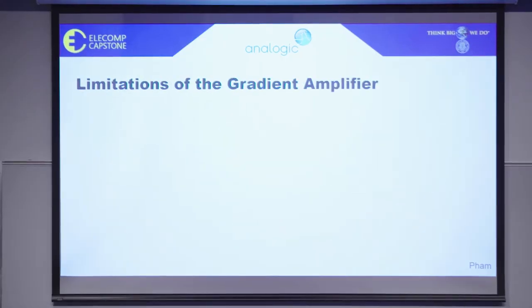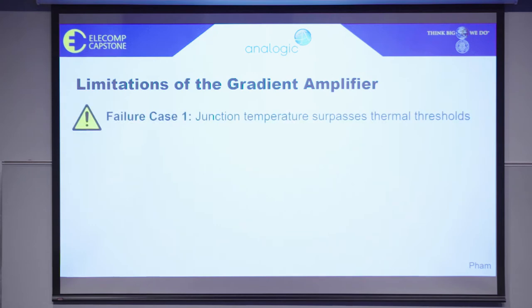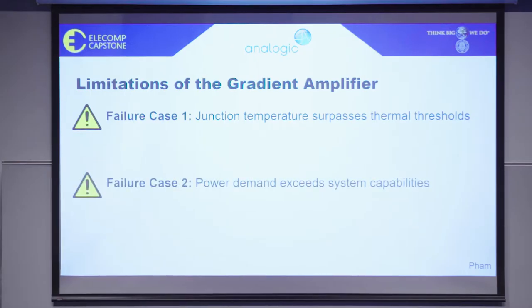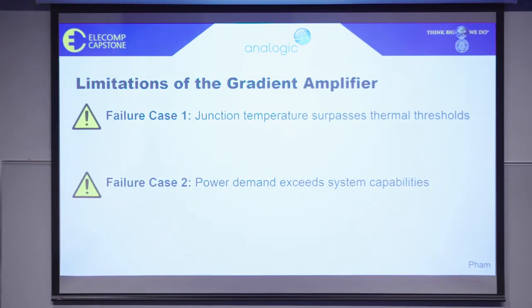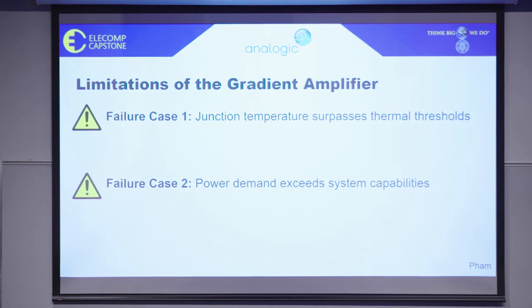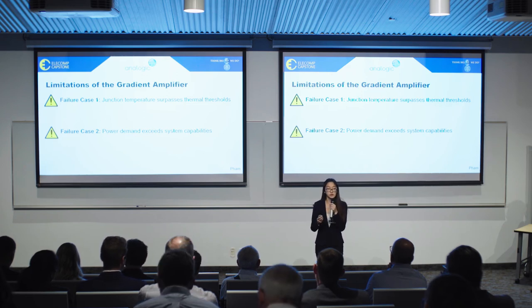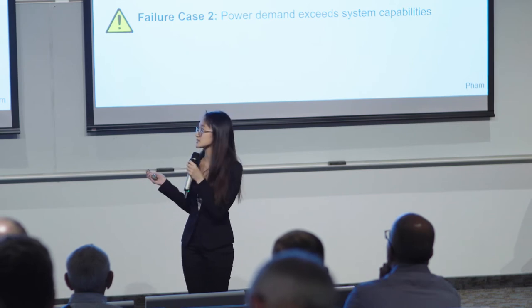There are two limitations of the gradient amplifier we are concerned with. The first is when junction temperatures exceed thermal thresholds, which can cause the controller to trigger a fault and go into automatic system shutdown. The second is when power demands exceed what the capacitor bank can supply, resulting in output waveform distortion and skewed MRI results. This is undesirable as it can lead to reduced system reliability, safety concerns, and increased costs.